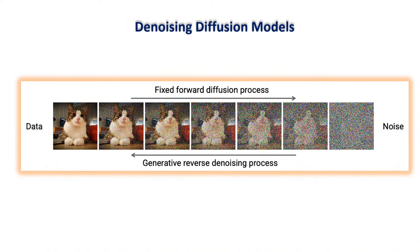But recently, the so-called denoising diffusion models have emerged as a powerful alternative to GANs for image generation. These models consist of two processes. One is the forward process, or forward diffusion process, in which we successively add a small amount of noise to the input image, and we train a denoising neural network to learn to predict the amount of the injected noise.